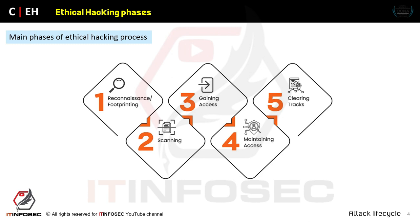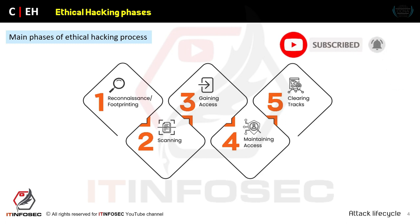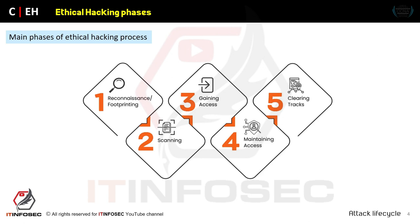The first category of scanning is knowing and identifying live systems in the network. Based on my ethical hacking agreement, the first item in scanning should be to identify the live systems in your network. The second category of scanning is knowing about the open ports.